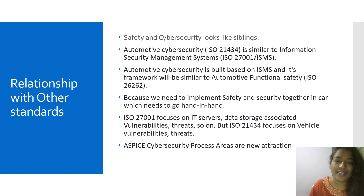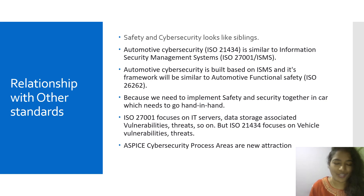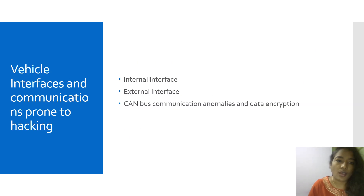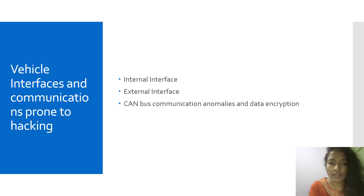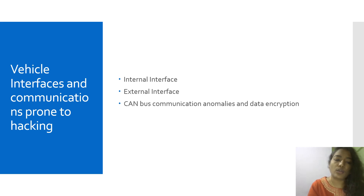Recently, ASPICE also released some process areas associated with cybersecurity, which is a new addition. Now, regarding vehicle interfaces and communications prone to hacking: the things listed here are very prone to hacking — internal interfaces, external interfaces, CAN bus communication anomalies, and data and script encryption.